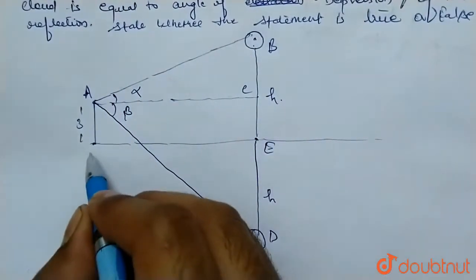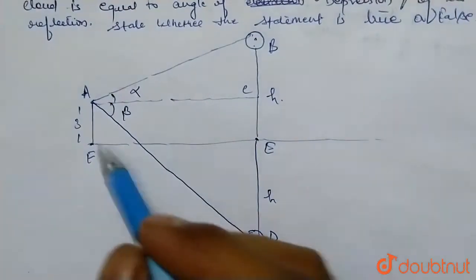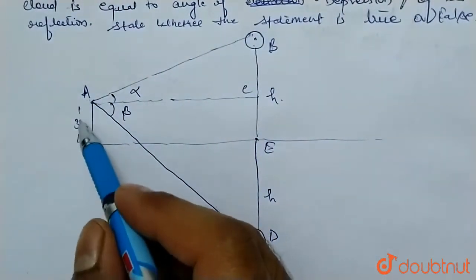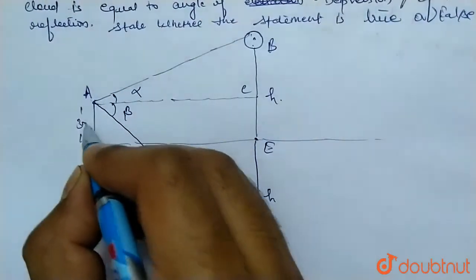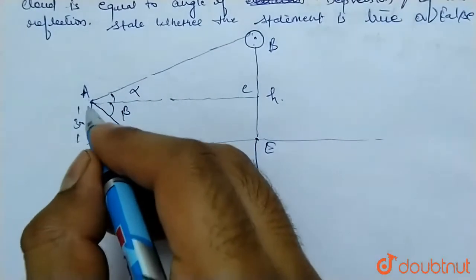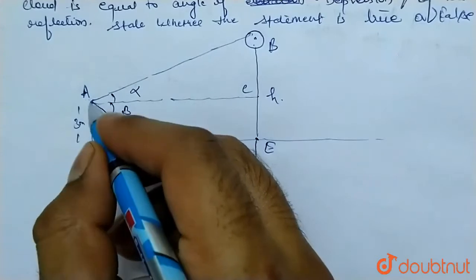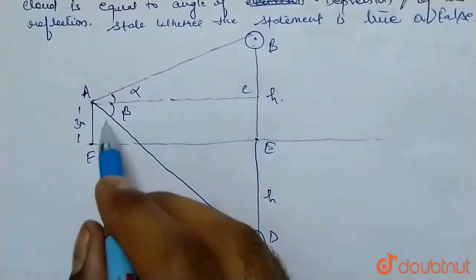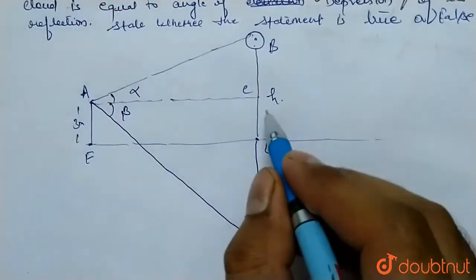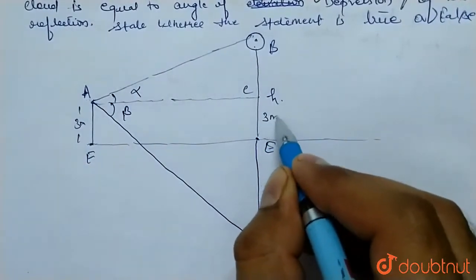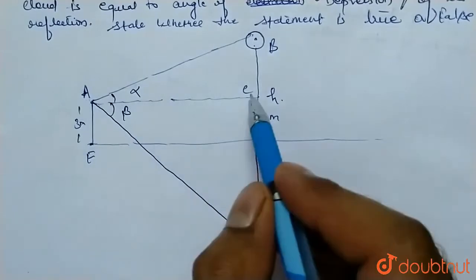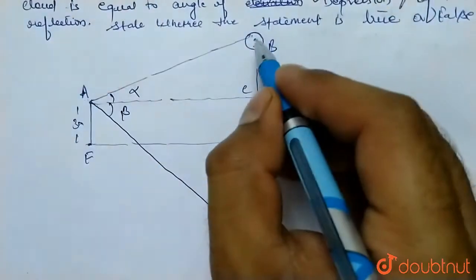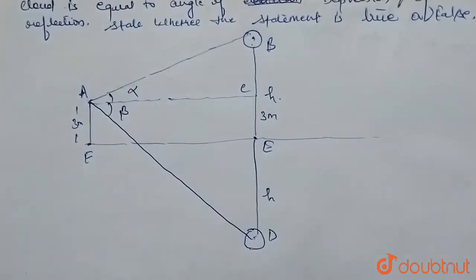AF is given as 3 meters — that is the distance of the man from the surface of the lake. So the reflection distance from the surface is also 3 meters. When we join this line, this length is also 3 meters.